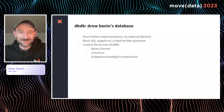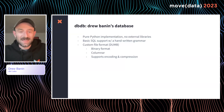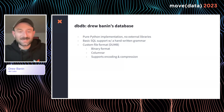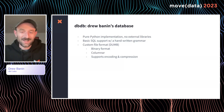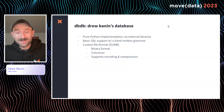My database is called dbdb, which stands for Drew Bannon's Database. It's a pure Python implementation — I don't use any external libraries, and it comes with basic SQL support and a handwritten SQL grammar, as well as a custom file format that I called Drew's Universal Message Buffer, or DUM for short. The cool thing about building a database is you can call stuff whatever you want. This file format supports a binary data structure, its columnar nature, and column encoding and compression. If you're not familiar with what any of this means, that's okay — that's what we're going to talk about today.